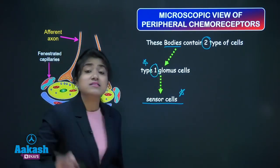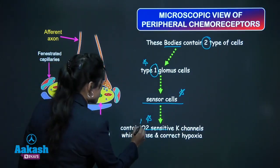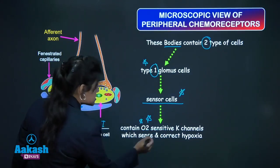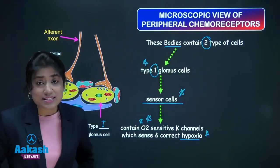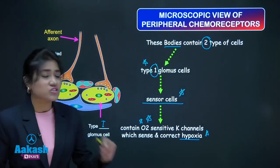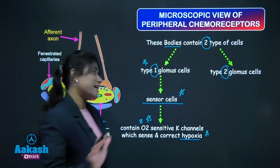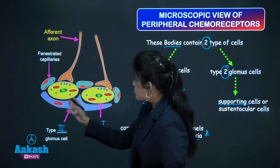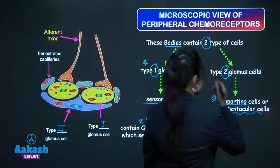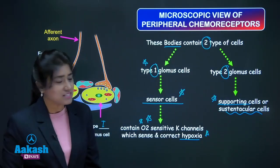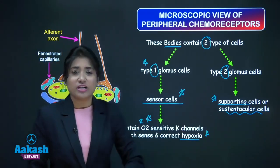Type 1 glomus cells contain oxygen-sensitive potassium channels which sense and correct hypoxia. Type 2 glomus cells are just supporting cells, also called sustentacular cells, while type 1 is the main sensor cell having oxygen-sensitive potassium channels.